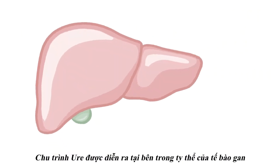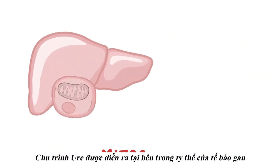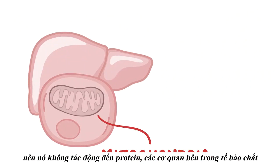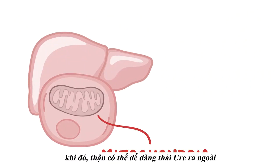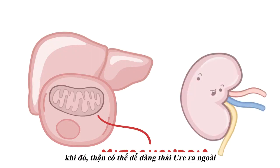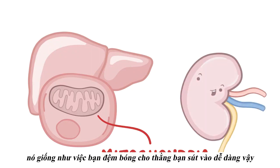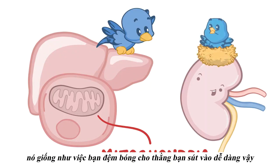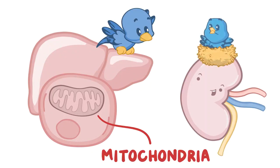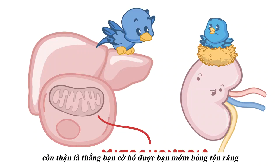The urea cycle takes place within the mitochondria, so that it doesn't affect proteins and organelles in our cytoplasm. Urea can then be easily dealt with by the kidney. It's a bit like how a mama bird might mash up a worm so that it's easier for a baby bird to digest. In this case, the liver is the mama bird, and the kidney is the little baby bird.